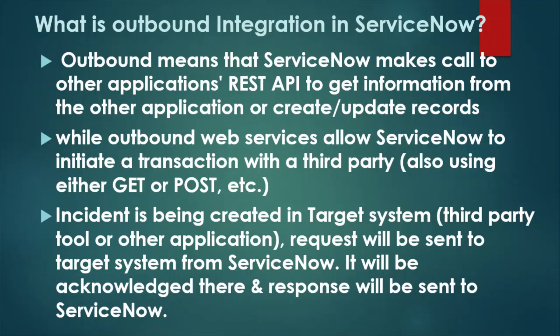Outbound integration means ServiceNow makes a call to another application's REST API to get information or create and update records. ServiceNow sends a request to a third-party tool and whatever action occurs happens in that third-party tool. Outbound web services allow ServiceNow to initiate a transaction with a third-party tool using any HTTP method such as GET or POST. ServiceNow sends the request, the target system acknowledges it, and the response is sent back to ServiceNow.